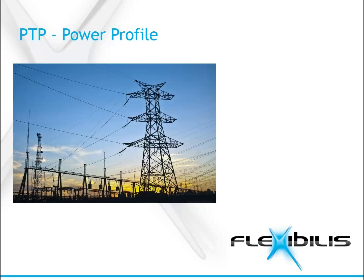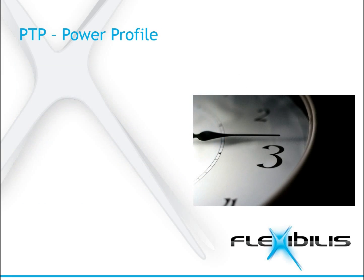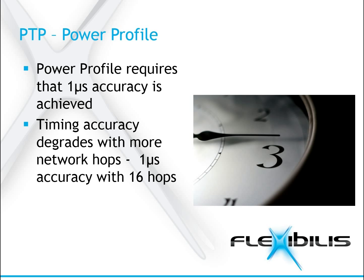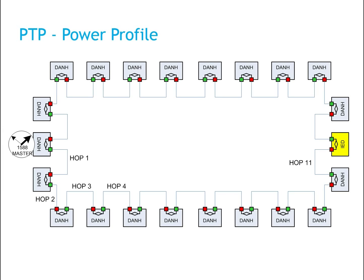The power profile is meant to be used in power system applications. It transfers PTP messages directly over layer 2 Ethernet and uses peer-to-peer transparent clock. The power profile requires that one microsecond accuracy is achieved. Timing accuracy degrades when the amount of network hops increases. The power profile defines the maximum number of hops from the Grandmaster to be 16. Here you can see an example picture with 11 hops between the master clock and an IED — intelligent electronic device — used in substation automation.